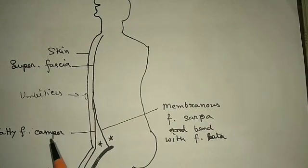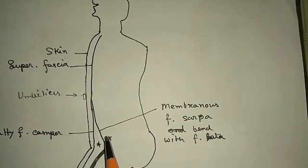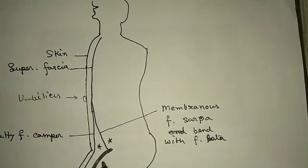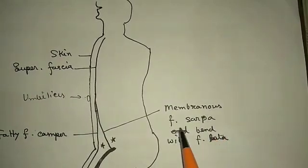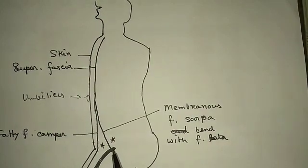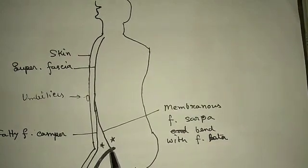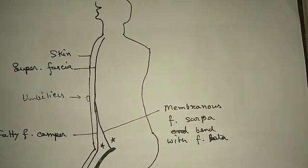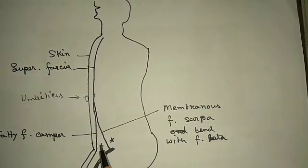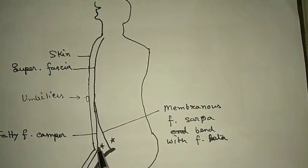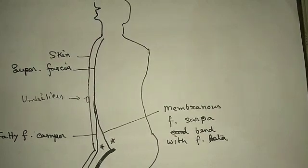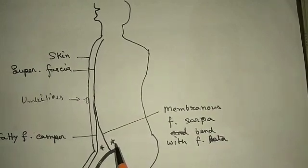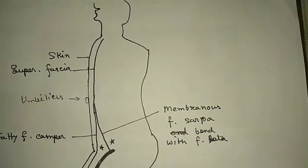The superficial fatty fascia of Camper is continued as the superficial fascia of the thigh. But the interesting point: the membranous fascia of Scarpa fuses with the deep fascia of the thigh - fascia lata - and here it ends. So the membranous fascia of Scarpa does not continue into the thigh. If fluid accumulates between the fatty and membranous layers, it passes downward toward the thigh. But if fluid accumulates here, it does not enter the thigh.